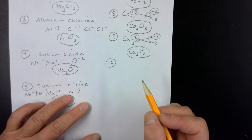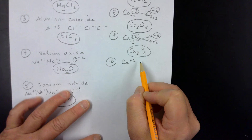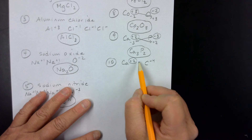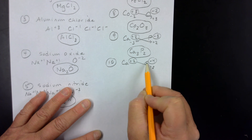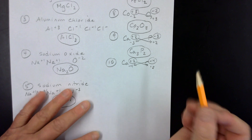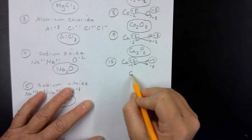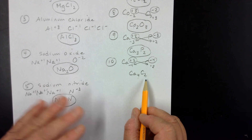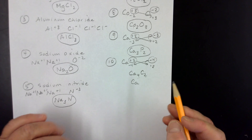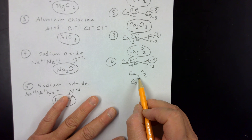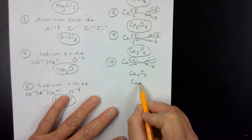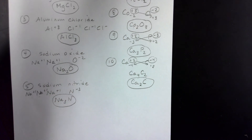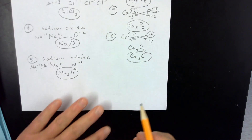Now let's look at something interesting. Example ten: calcium plus two and carbon minus four. When we drop and swap, we get a minus four on the calcium and a plus two on the carbon, giving CA₄C₂. However, ionic compound formulas must be in the lowest ratio. Four to two reduces to two to one, so this becomes Ca₂C. We drop the subscript of one since ones are understood.